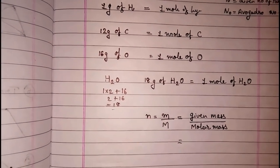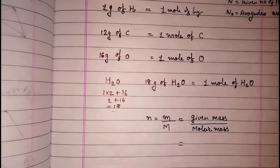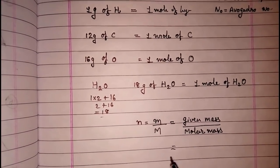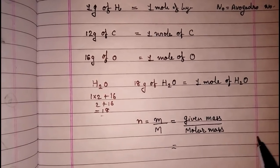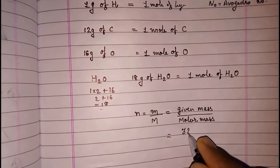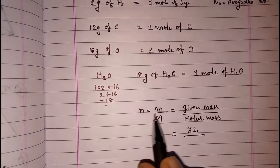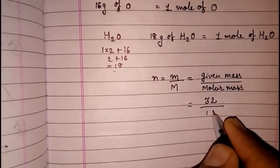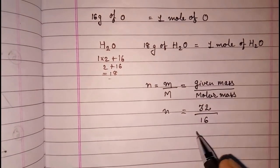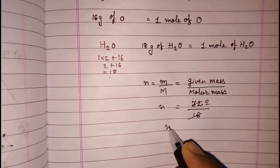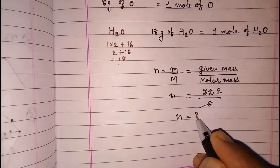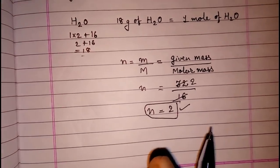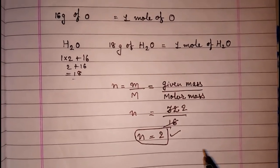Let us take one example. If I have 32 grams of oxygen, how many moles are there? The given mass is 32 grams of oxygen, and the molar mass of oxygen is 16. So number of moles = 32 / 16 = 2. The number of moles will be 2.